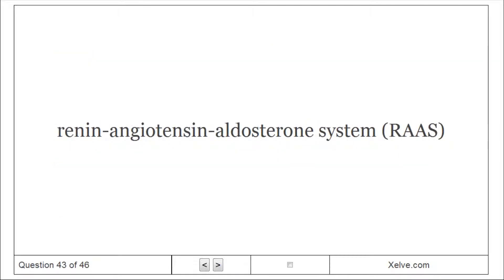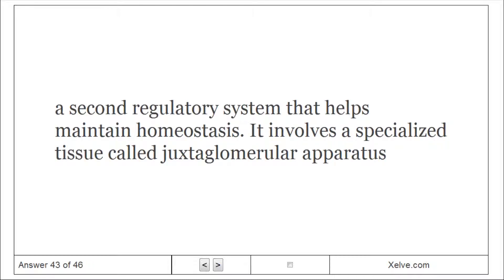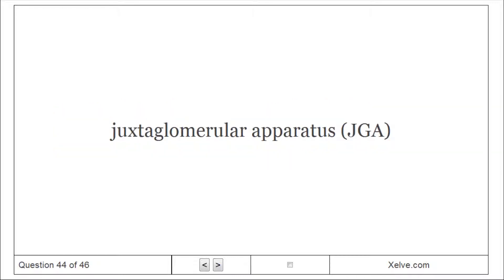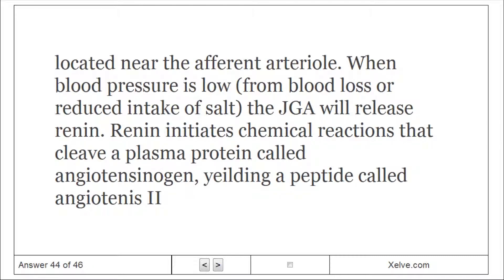Renin-angiotensin-aldosterone system: A second regulatory system that helps maintain homeostasis, it involves a specialized tissue called juxtaglomerular apparatus. Located near the afferent arteriole, when blood pressure is low from blood loss or reduced intake of salt, the JGA will release renin. Renin initiates chemical reactions that cleave a plasma protein called angiotensinogen, yielding a peptide called angiotensin II.